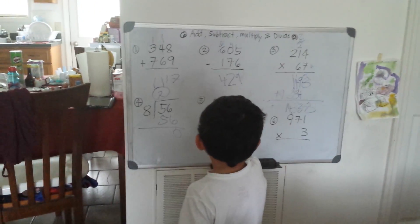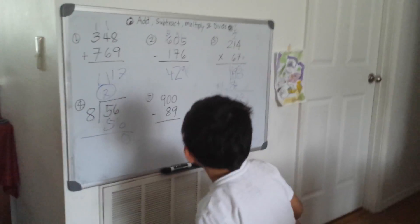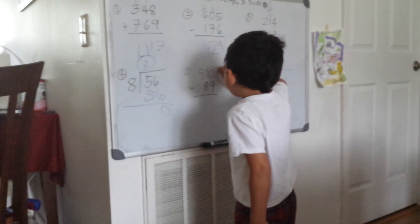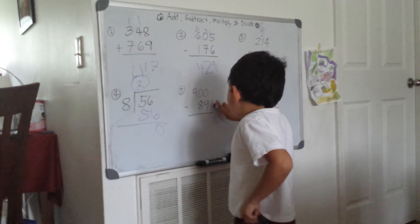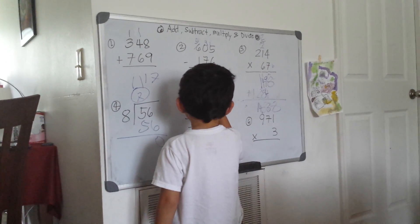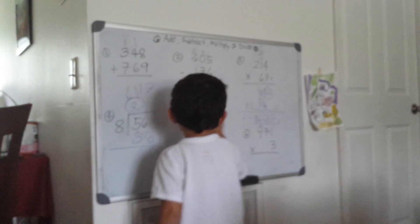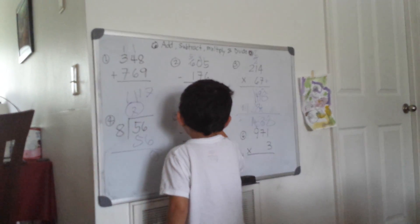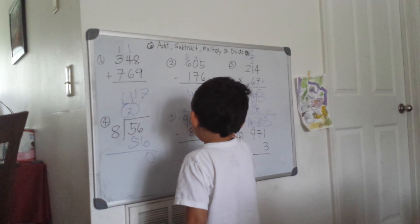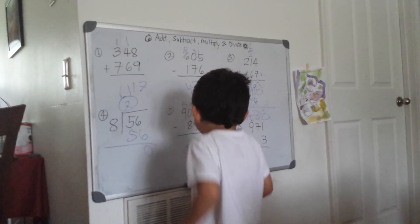900 minus 89. 0 minus 9 cannot be done. Borrow from the 9, which becomes 8. The 0 becomes 10. 10 minus 9 is 1. 8 minus 8 is 0. The answer is 811.